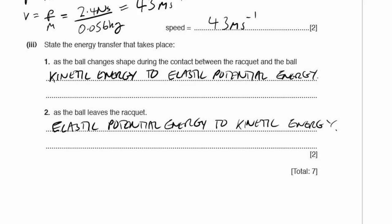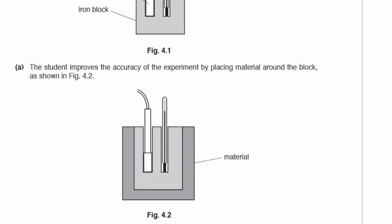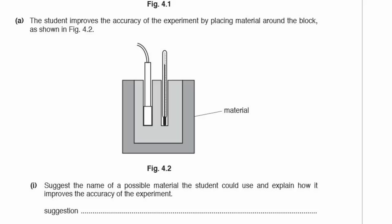Question 4. Figure 4.1 shows apparatus used to measure the specific heat capacity of iron — an iron block, electric heater, and thermometer. Part A: the student improves accuracy by placing material around the block. Suggest a possible material and explain how it improves accuracy.